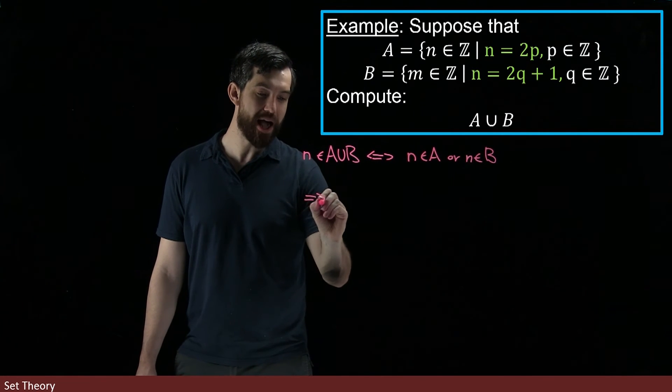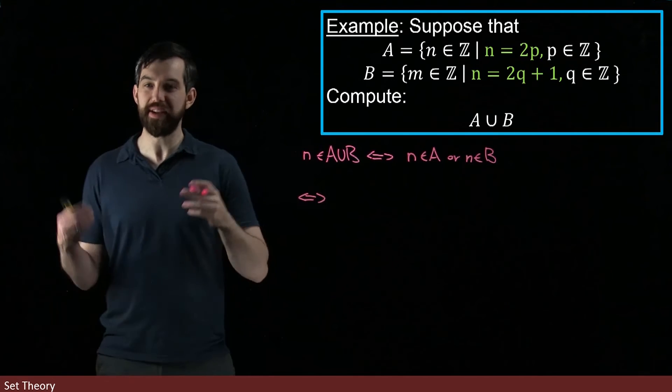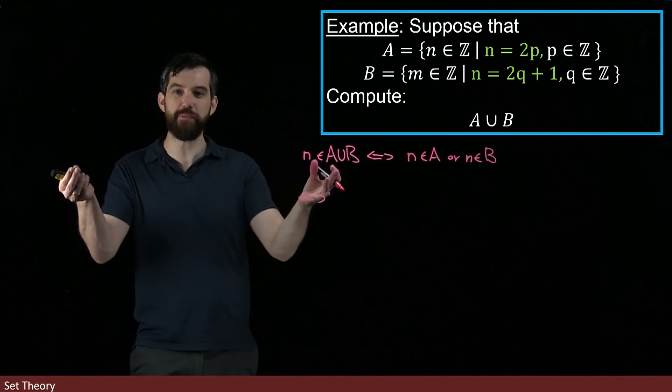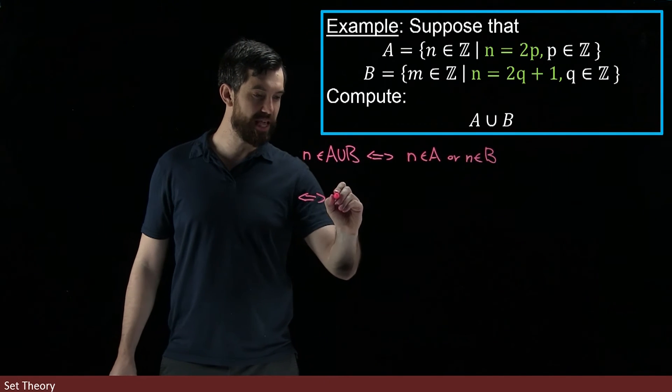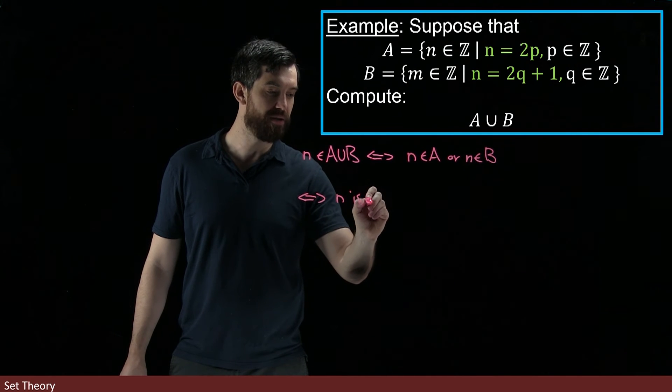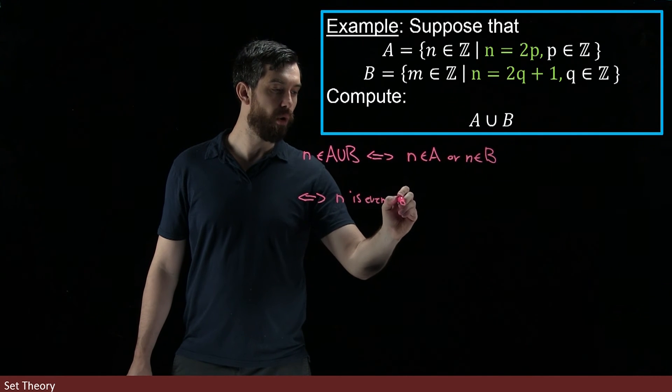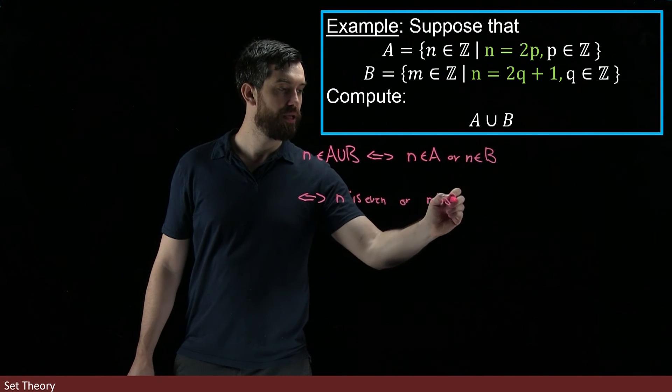And then I'm going to write a biconditional arrow again. I'm going to apply the definitions of both A and B at the same time. So this is saying that n is even or n is odd.